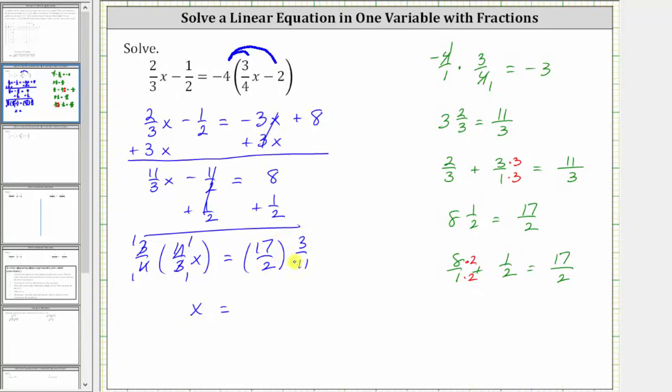On the right side, nothing simplifies, and therefore, we multiply the numerators and denominators. 17 times 3 is 51. 2 times 11 is 22.